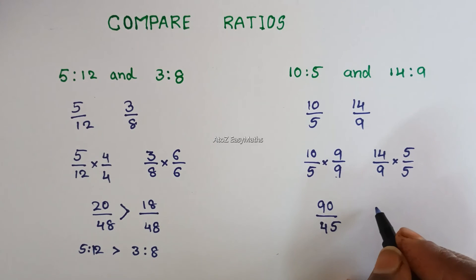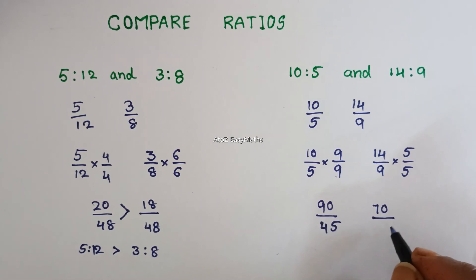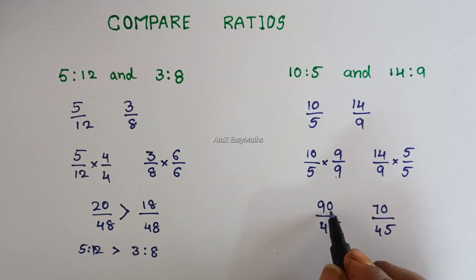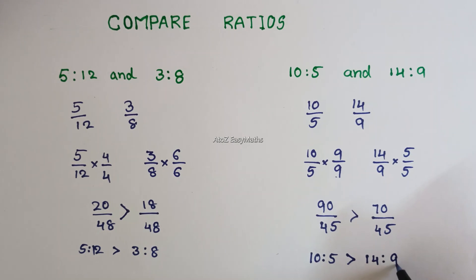Here also, 14 times 5 is 70, and 9 times 5 is 45. Both denominators are equal. We know that the higher numerator value is the highest value. Now we understand that 10 is to 5 is greater than 14 is to 9.